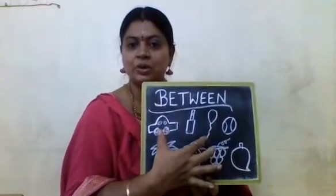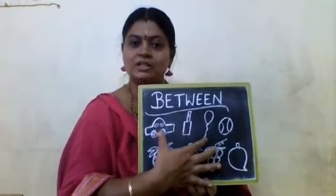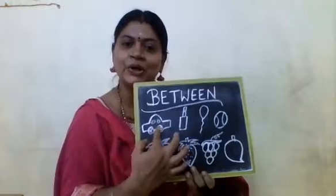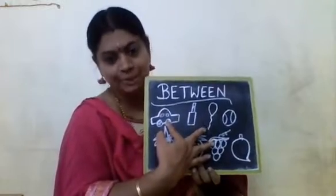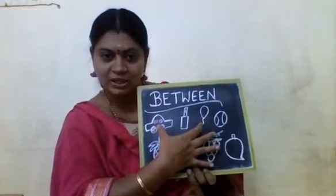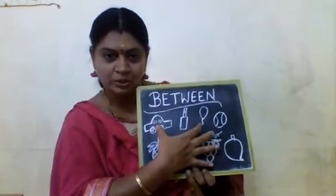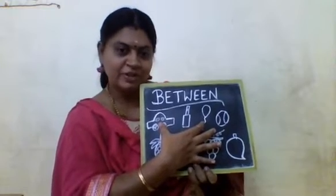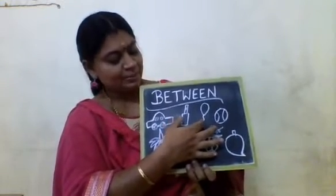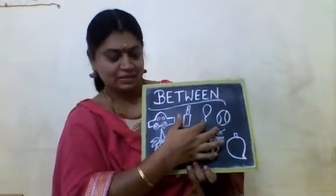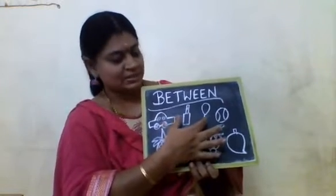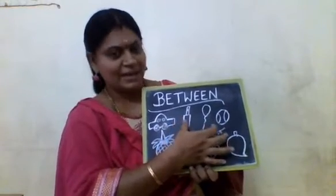So now we are going to find what is between car and balloon. What is that between car and the balloon? Between means middle. So in the middle, bat is there. So between car and balloon, there is a bat.